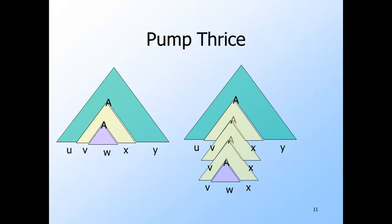And in the previous tree representing pumping twice, we could again replace the purple tree by the yellow and get a bigger tree whose yield is U, three V's, W, three X's, and then Y.